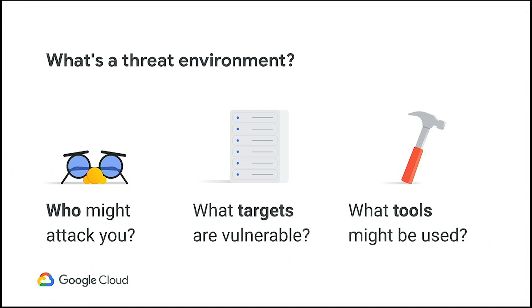We're going to start on a baseline of what is a threat environment. It's the category of who are the people or systems that may attack you — everything from hackers for profit on the internet, foreign governments, though most likely it's people inside your organization who accidentally delete everything. That's still a threat. Understanding what targets are available — if you have a database publicly accessible on the internet, that's an obvious target. And then what tools might be used — understanding attackers, targets, and tools gives you a much better way of understanding how to defend.